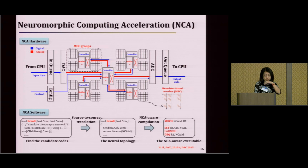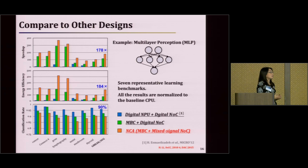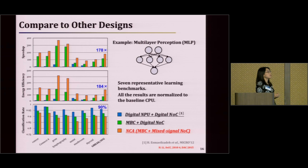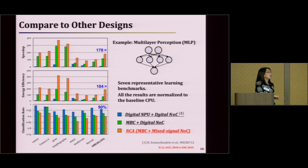The work was evaluated at the architecture level. We selected a couple of classification applications — we do not have sufficient computation power to do more comparisons — but comparing with digital neural process element implementations and with memristor crossbar plus digital NOC implementations, you can see that the performance and energy consumption are significantly improved. The classification rate has some degradation because in these simulations we consider process variations as well as noise impacts. Around 90% is still a good number at this stage.